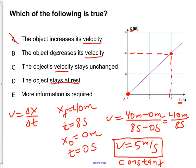Likewise, B is wrong because it dictates that our velocity is decreasing. But we have already stated that it is constant. So that's also wrong.